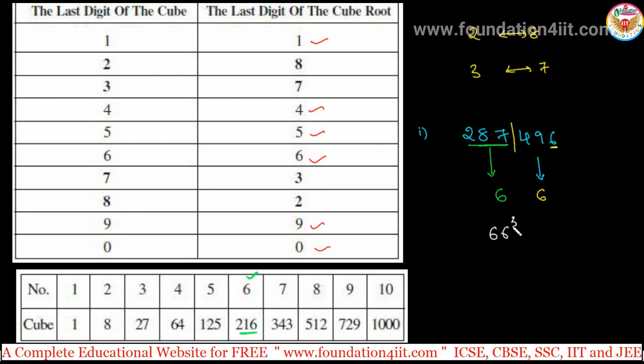66 cube is exactly equals to 287,496. 287, next number is 343, we should not take next number, only the before.